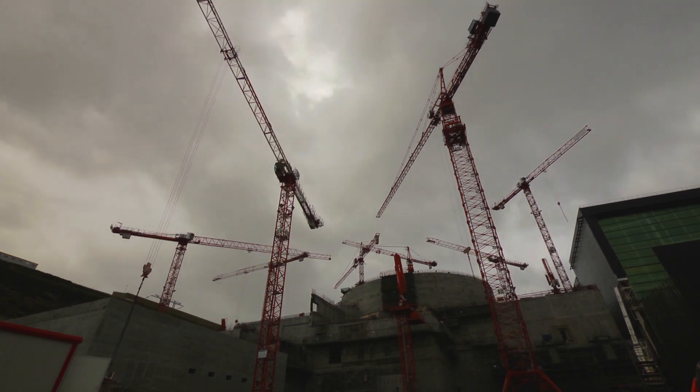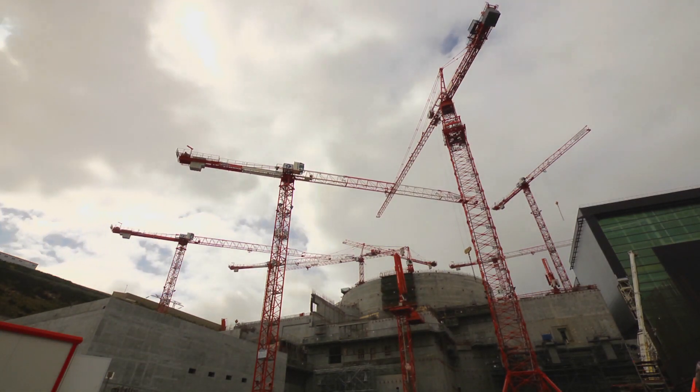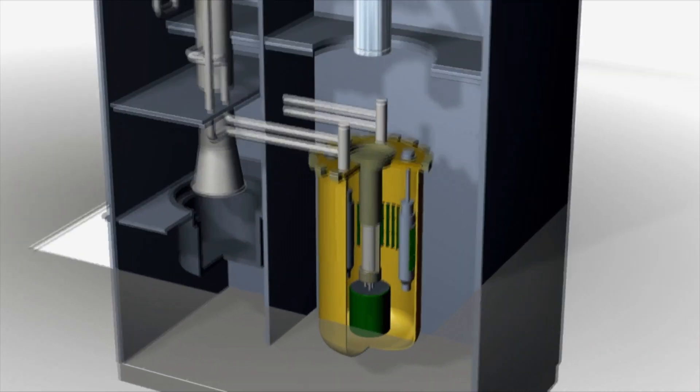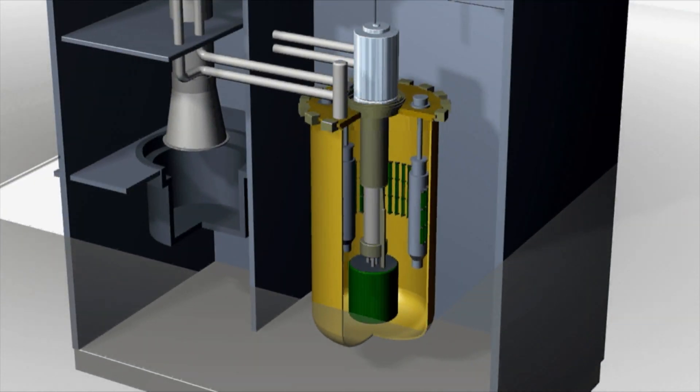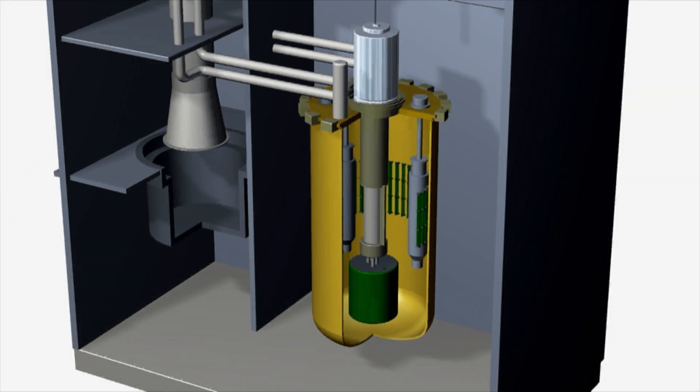The current generation of reactors we're building now are third generation reactors. This technology is much safer, but fourth generation reactors like the integral fast reactors can use the waste from the first three generations as fuel.